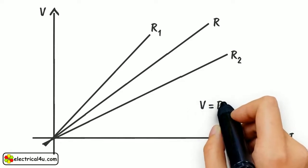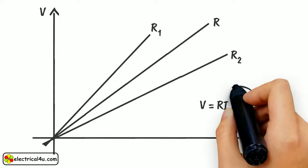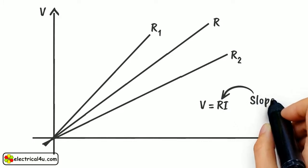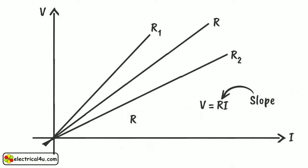Here, in V equals R I, R indicates the slope of the line. The more the value of R is, the more will be the slope of the line as shown.